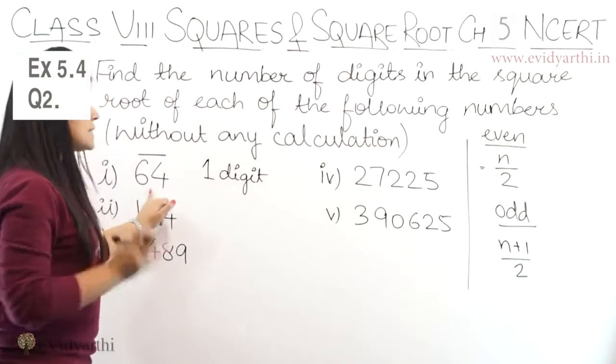Moving to the third part. Again let's put the bars. So yahan pe 2 bars hain. So again it will be a 2 digit square root. Ab agar hum formula se karein. So 1, 2, 3, 4. 4 means even number. So 4 upon 2. 4 upon 2 is 2 again. Means 2 digits.